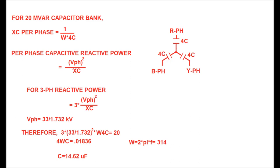The equation becomes: 3 × (33 / 1.732)² × ω × 4C = 20 MVAR. Solving, 4ωC = 0.01836. With ω = 2π × 50 = 314 rad/s, solving this equation gives C = 14.62 microfarad.